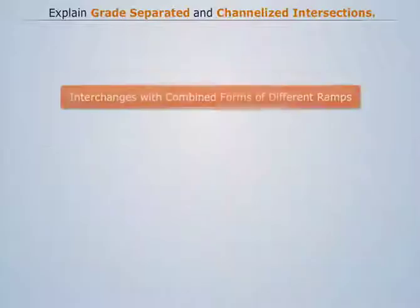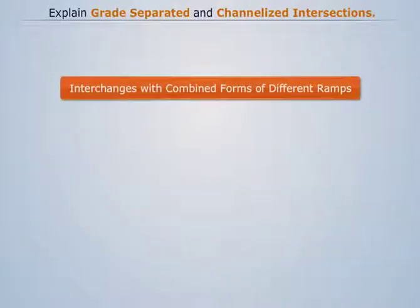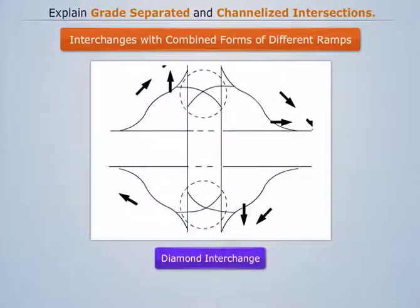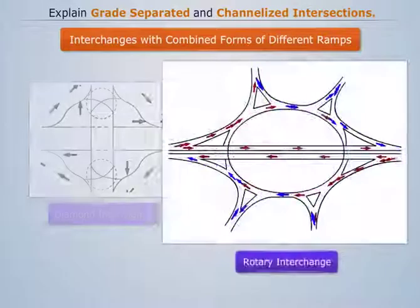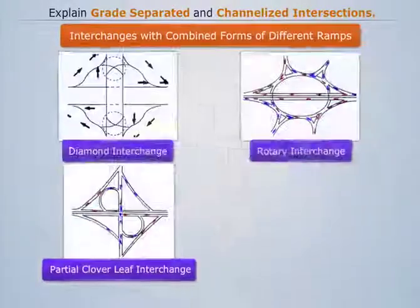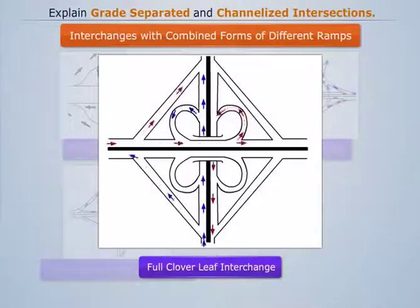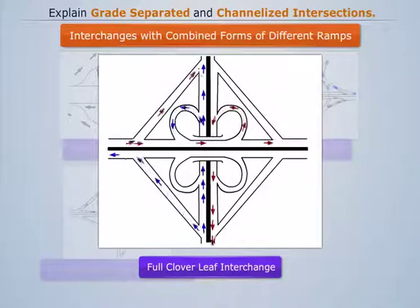The types of interchanges with combined forms of different ramps are diamond interchange, rotary interchange, partial clover leaf, and full clover leaf, which fulfill all the requirements of turning traffic involving the simplest traffic maneuvers.